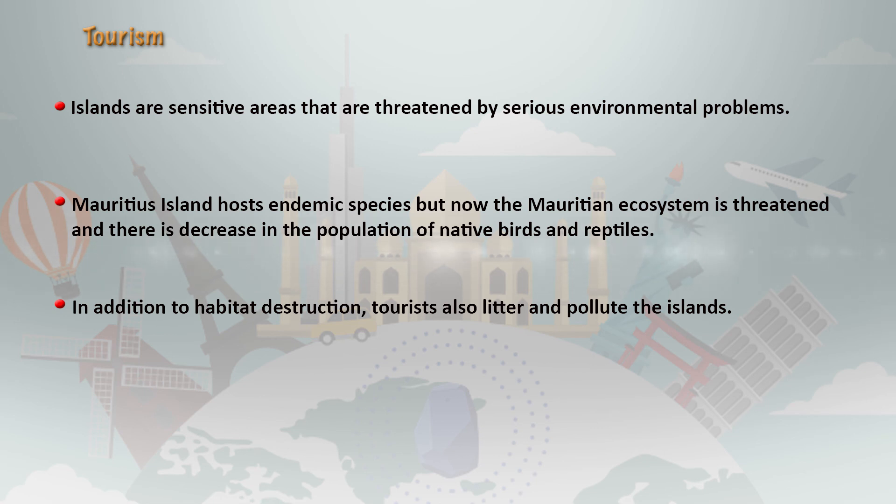One example given is Mauritius Island. The Mauritian ecosystem is threatened because there is a decrease in the population of native birds and reptiles. Habitat destruction and tourist littering also pollute the islands. We have understood in this module the environmental impact assessment of the tourism industry and the cement industry. I hope you have had a good understanding. Thank you.